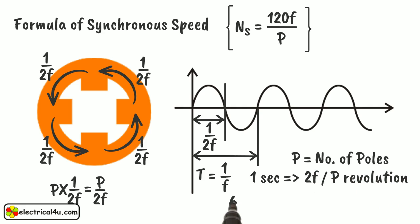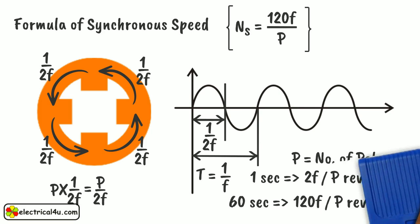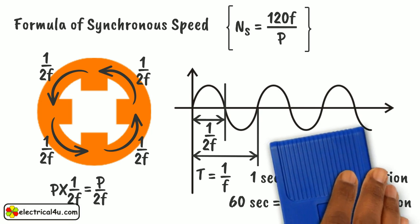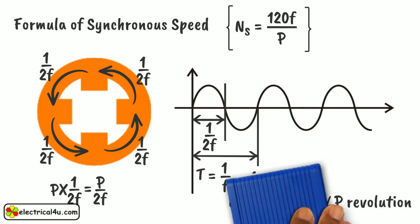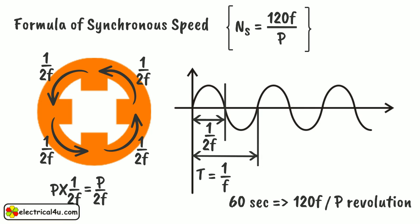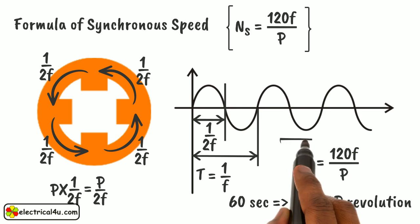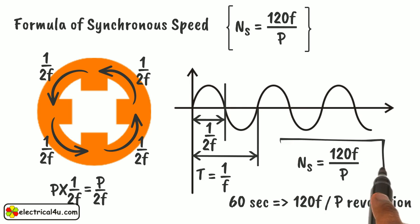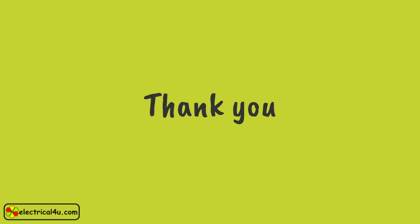So in 1 minute, or 60 seconds, it revolves 120f by p. As per definition, it is synchronous speed. So we can write Ns equals 120f by p. Hope you got an idea. Thank you.